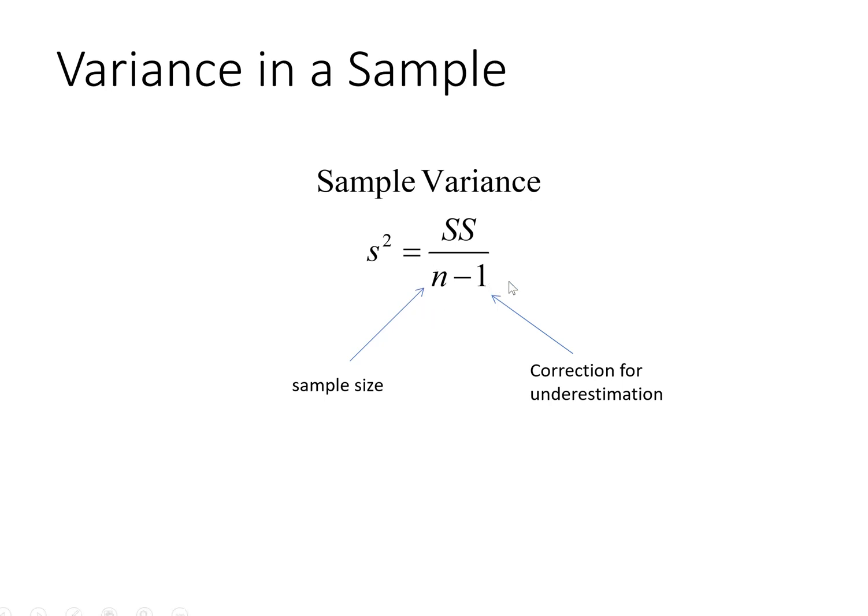Most statistical software programs will automatically apply it in the calculation of the sample variance. So we can still think of it though as the average squared deviation from the mean, or estimate of the average squared deviation from the mean in the population. We just have a bit of a correction in the formula.